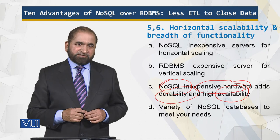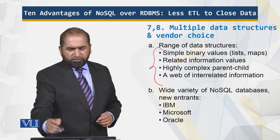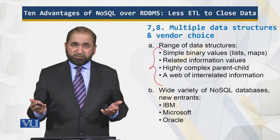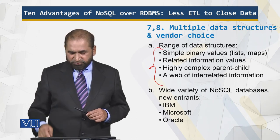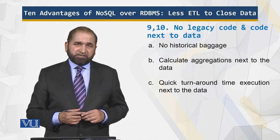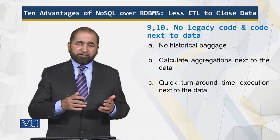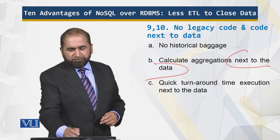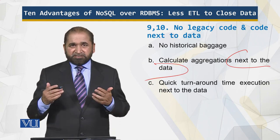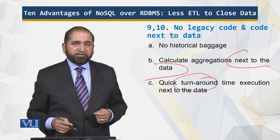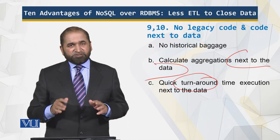There are a variety of NoSQL databases to meet your needs, as opposed to a single relational model. There is a range of data structures, and there are wide variety of new entrants such as IBM, Microsoft, and Oracle — so it is not just limited to open source. Finally, there is no historical baggage: no large amounts of historical data that needs to be converted. You can perform aggregations without porting a lot of data — it is next to the data, and indexes are updated as the databases are populated, so turnaround time is very close to the data. These are the fundamental 10 advantages of NoSQL with respect to the relational model.